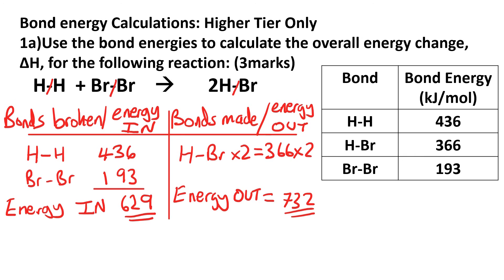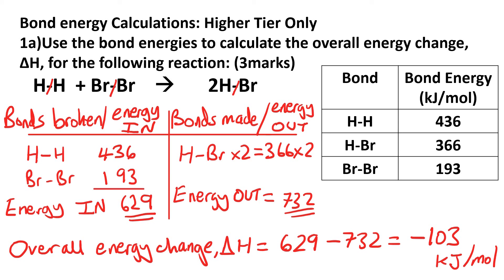To work out the overall energy change, we do the energy in first, take away the energy out, and that comes to minus 103 kilojoules per mole. The minus is significant because that tells us it's an exothermic reaction.